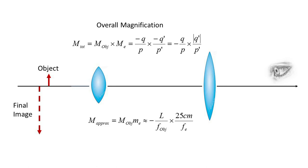The approximate and well-known expression for magnification will depend on the two focal lengths, F objective and Fe, as well as the barrel length L and the assumed near point of 25 cm.